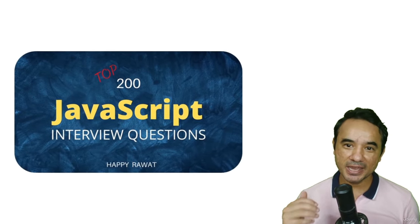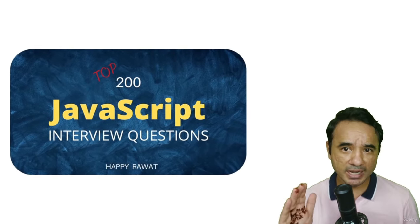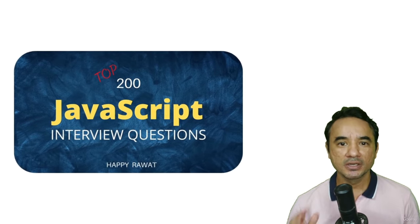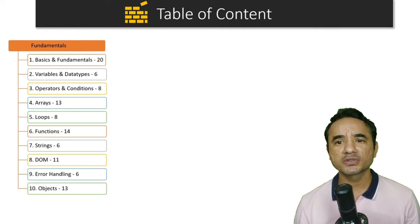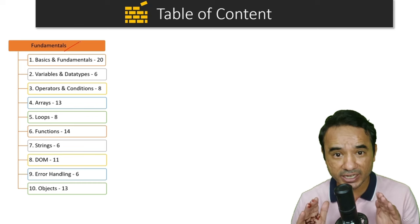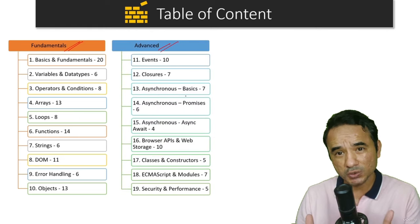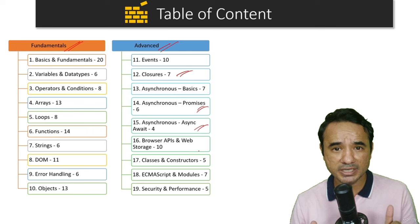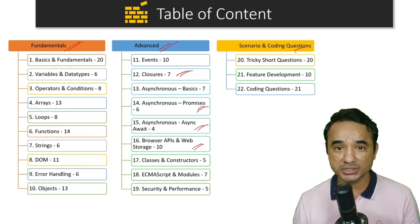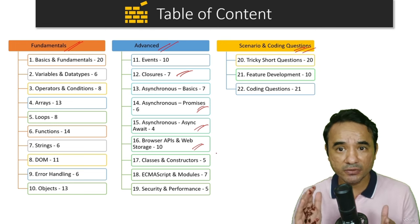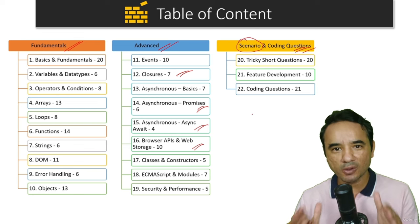Welcome to this course. My name is Happy, and before starting, let me share the structure and chapters so that you can get the most out of it. The course is divided into three parts and 22 sections. First, we cover questions from the first 10 sections of JavaScript fundamentals, then advanced topics like closures, promises, async/await, and browser APIs. Finally, we cover around 50 scenario-based and coding interview questions, because nowadays interviewers give you situations to solve rather than direct questions.